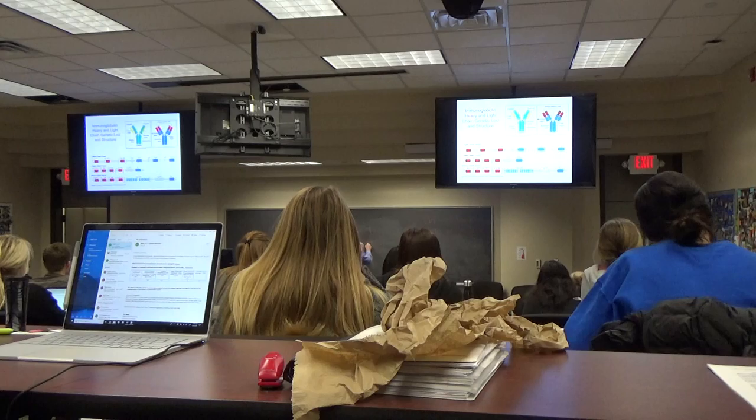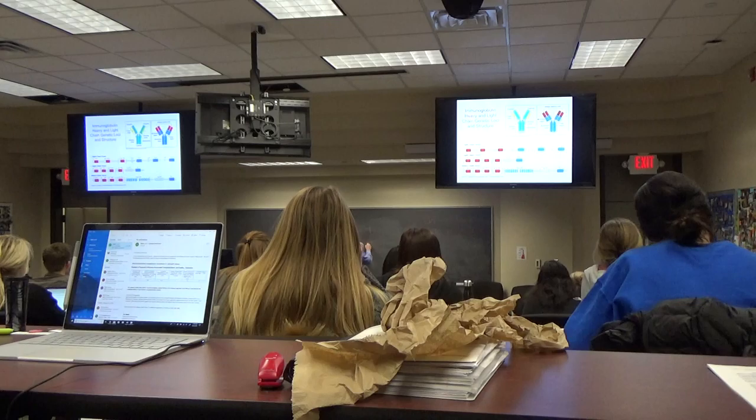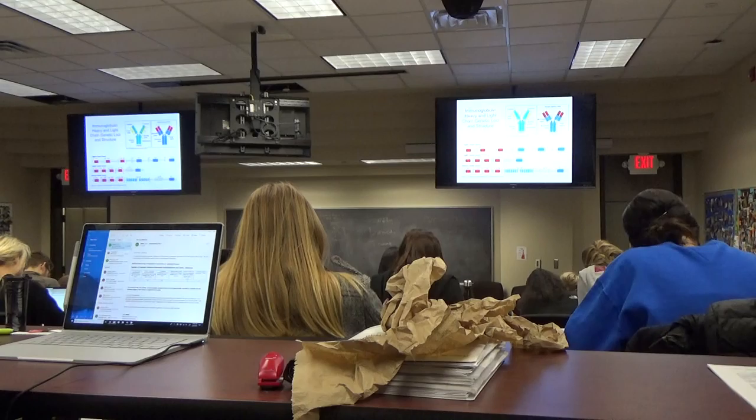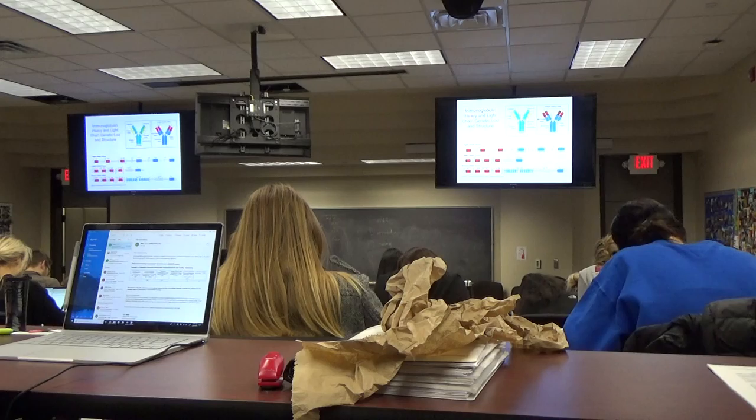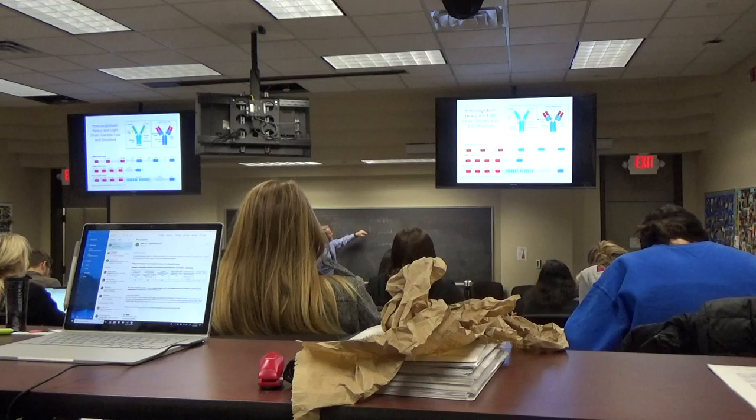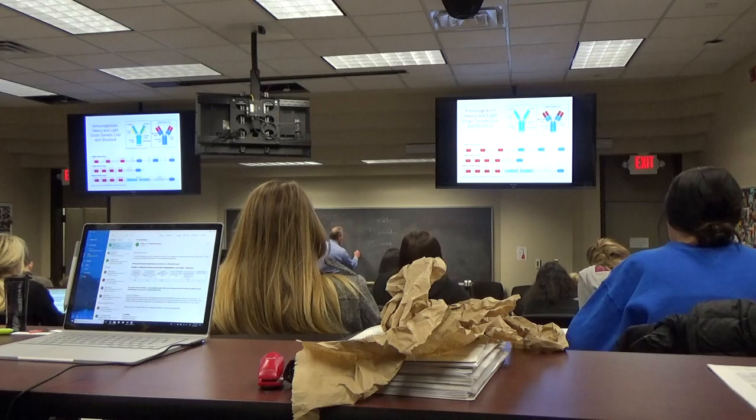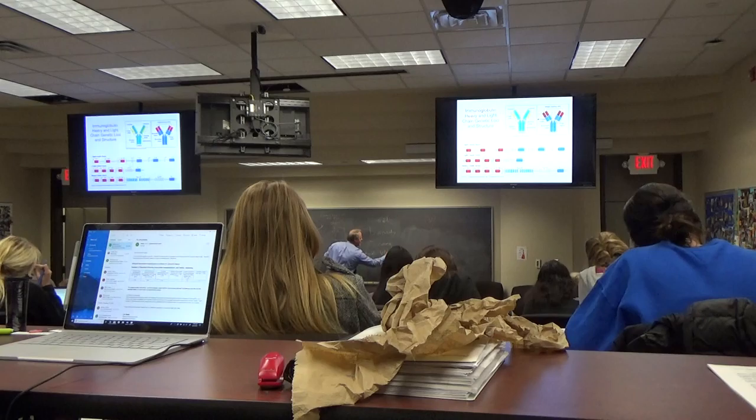So we have V, we have D, and we have J. The V is for variable, D is for diversity, and J is for joint. These are what we call gene segments. They are pieces of DNA that only code for part of a protein.